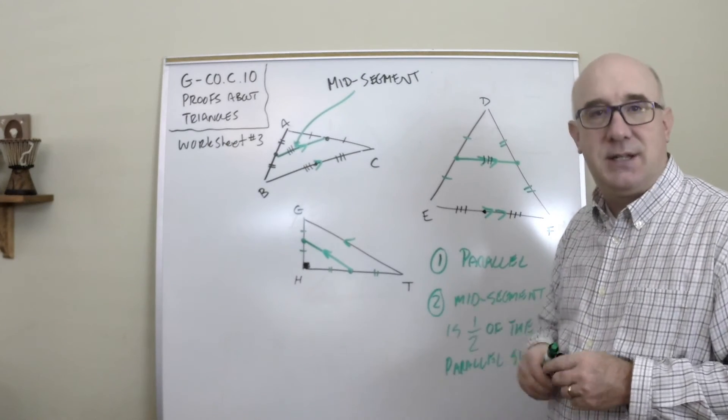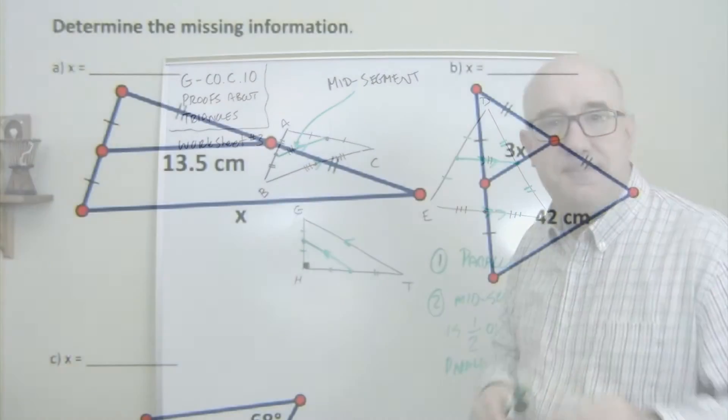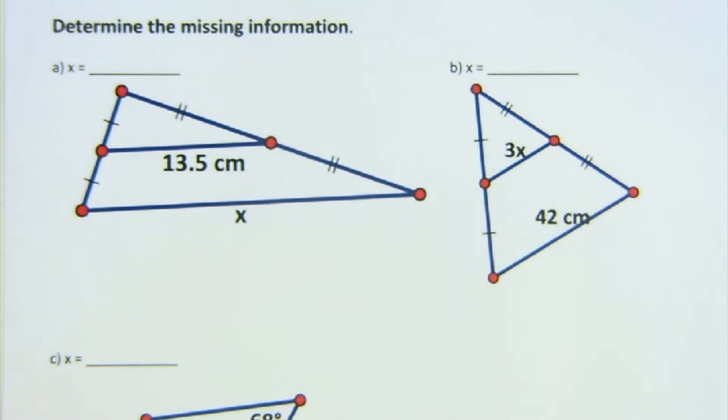All right, good luck with this. We'll look at some specific ones up close. Mid-segment relationship, as stated earlier, is pretty straightforward. Two things that you're looking for is the relationship with parallel, and the second is it's half the size of the third side.